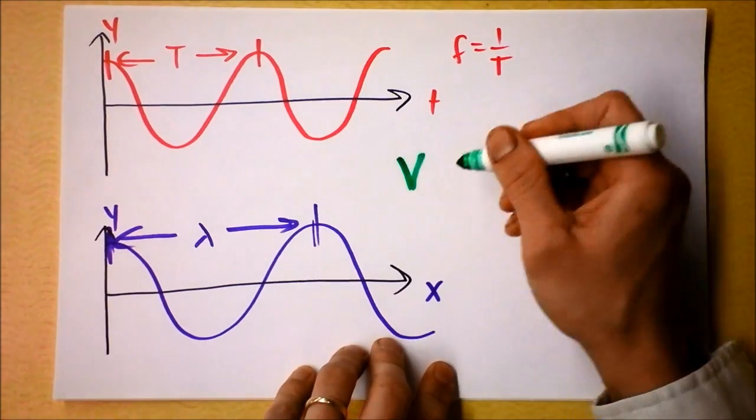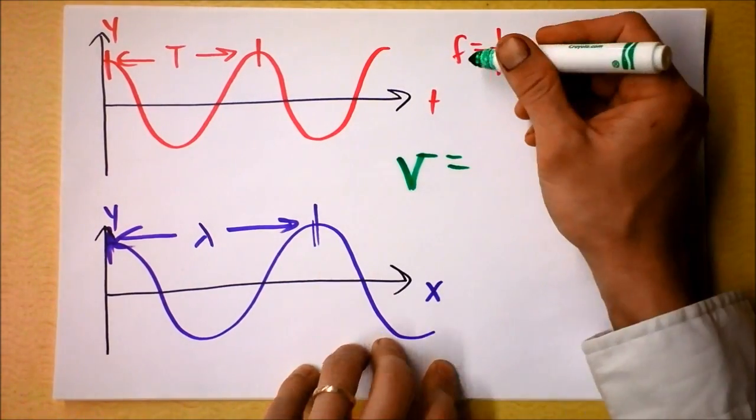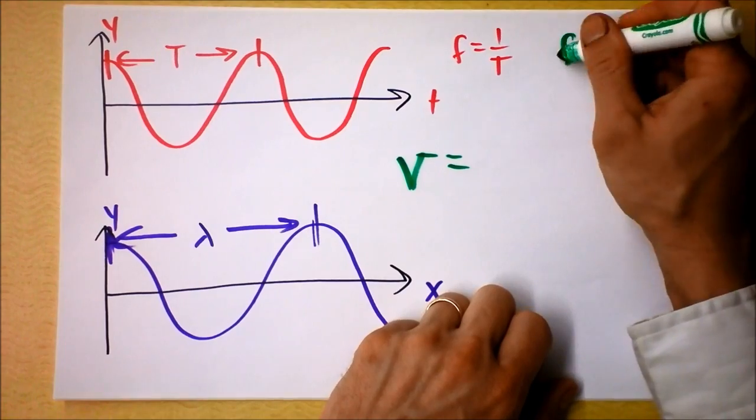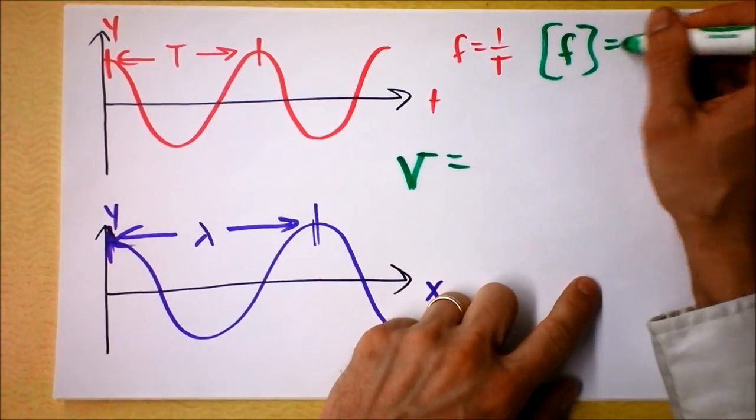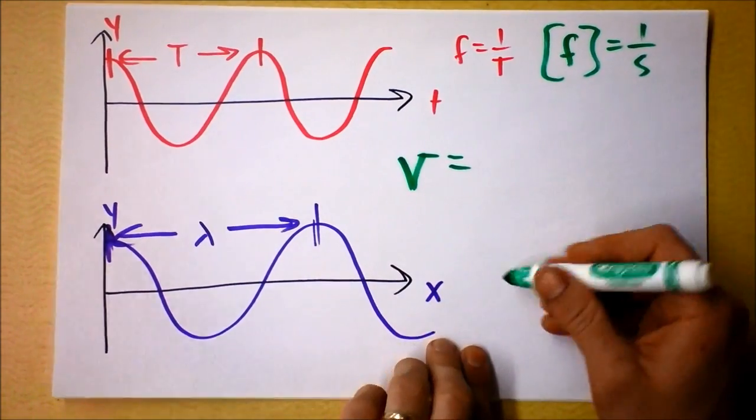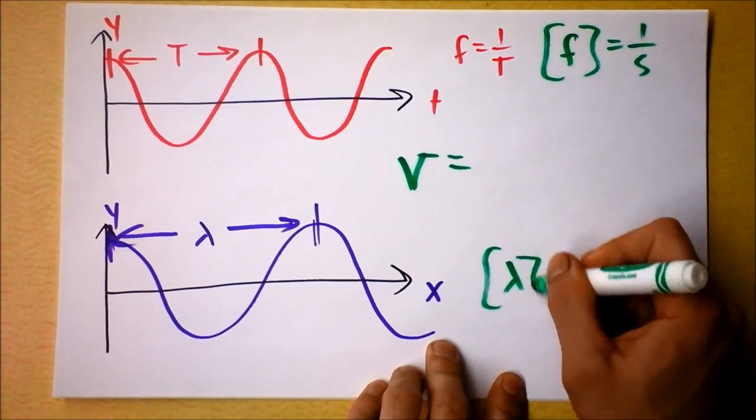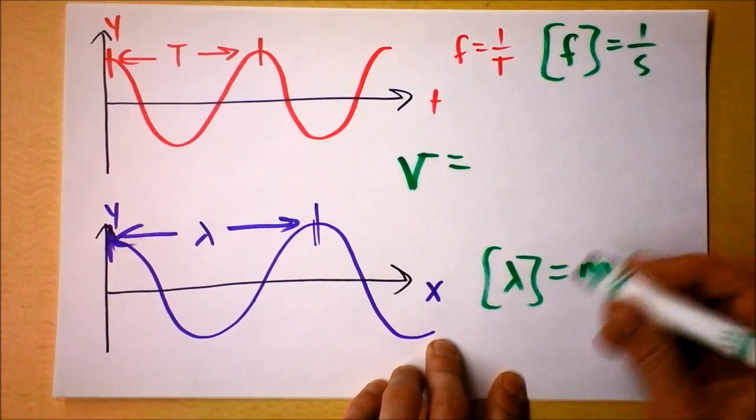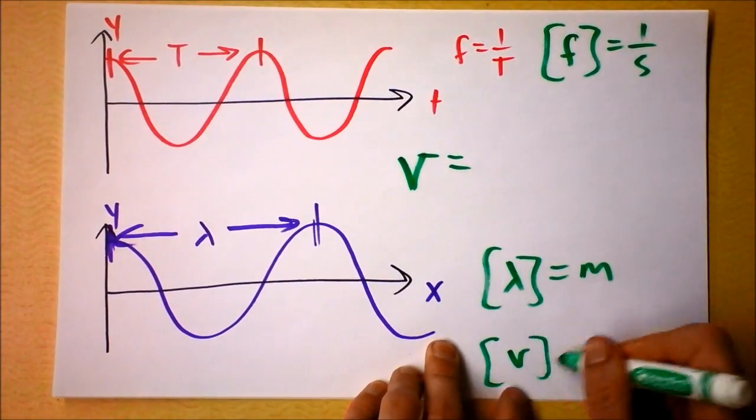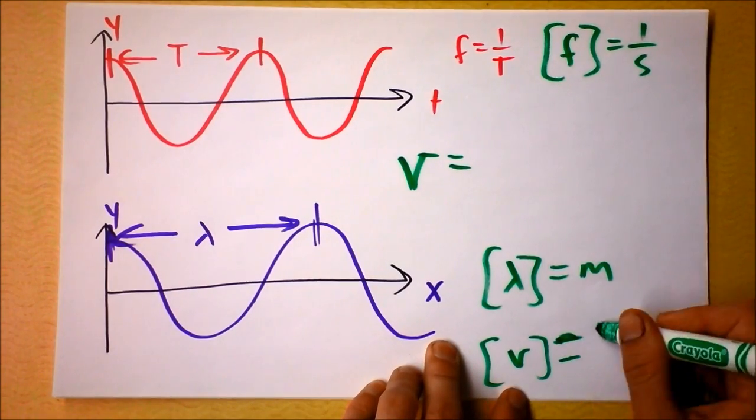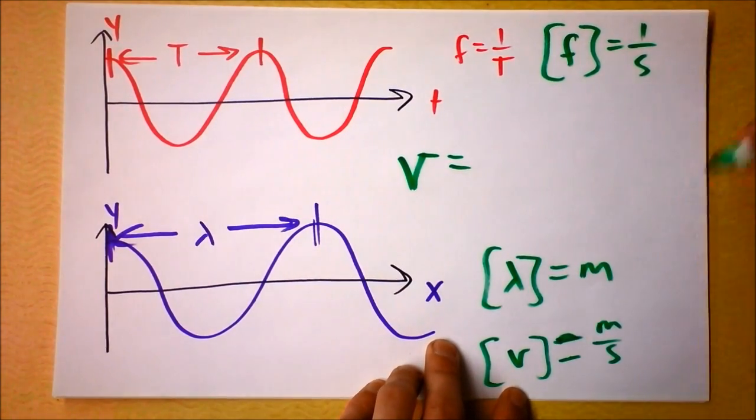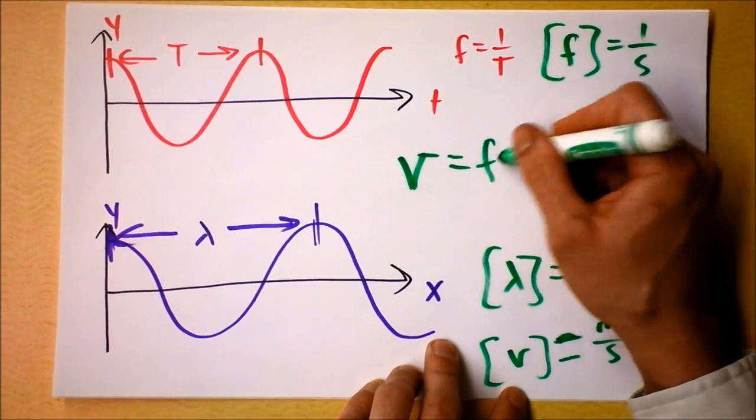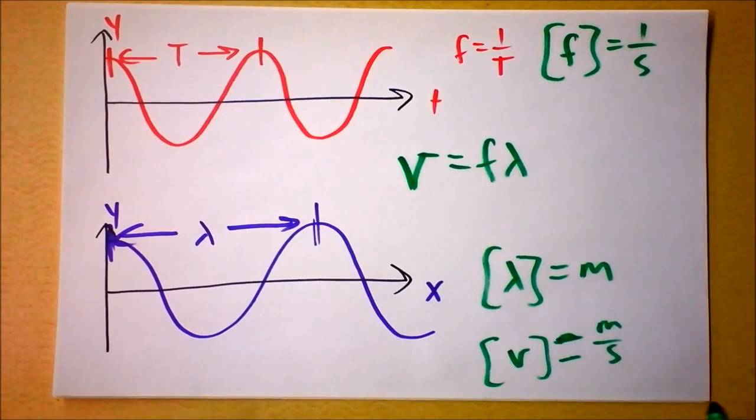I frankly never remember how speed is related to frequency and wavelength. But I remember the units of frequency are one over seconds. And I know the units of wavelength are meters. And I know the units of speed are meters per second. So if I've multiplied those two together, then I'm going to say that speed is frequency times wavelength.